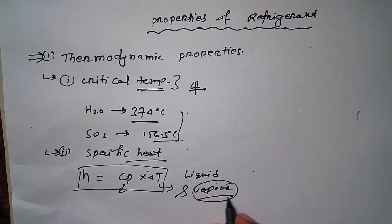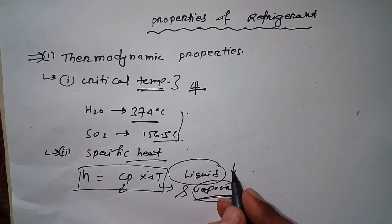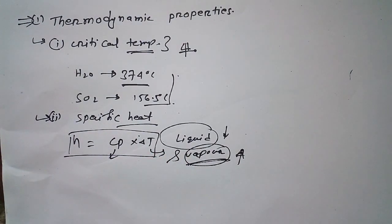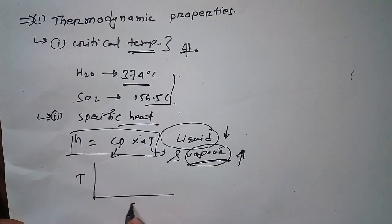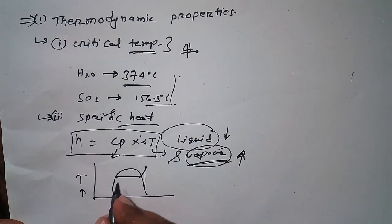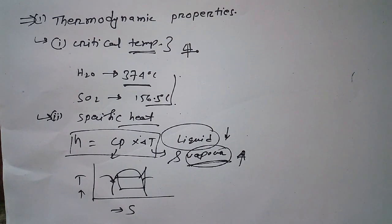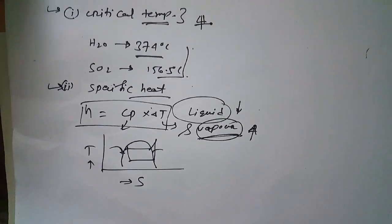For specific heat, the value must be as high as possible for vapor, and as low as possible for liquid. If we consider a temperature-entropy (TS) diagram, we can see the two states — gas and liquid. So for specific heat: for vapor, as high as possible is desirable; for liquid, as low as possible is desirable.